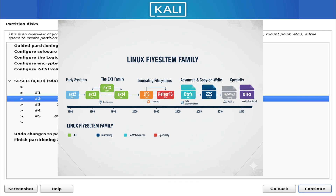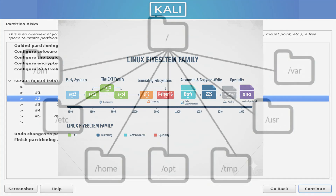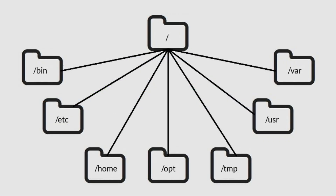Now let's connect these ideas to the Linux directory tree. Unlike Windows, Linux doesn't label drives with letters like C or D. Everything starts from a single root directory — just a forward slash. From that root, all other folders branch out: directories like bin, etc, home, usr, and var.